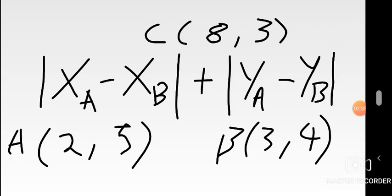Look at the main location C — it has coordinates (8, 3). Picture this in relation to the formula on the screen. In an x, y coordinate system, the first digit is x and the second is y. So x_a is simply the x value from the location where you want to position yourself, which is point C. Since x is the first digit and we're positioning at C, our x_a here will be 8.